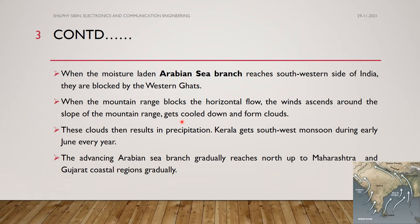The winds get cooled down and form clouds. These clouds then result in precipitation during early June every year.